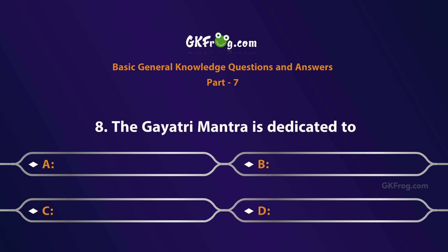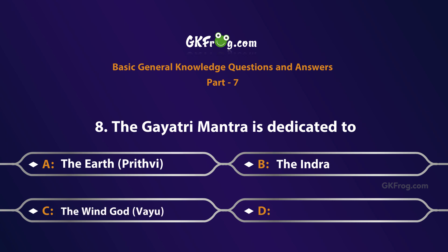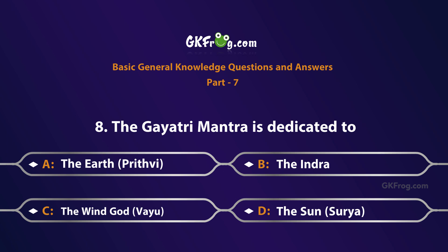The Gayatri Mantra is dedicated to: A. The Earth (Prithvi), B. Indra, C. The Wind God (Vayu), D. The Sun (Surya). Correct answer is The Sun, Surya.